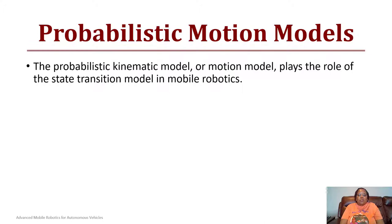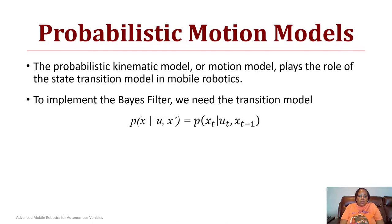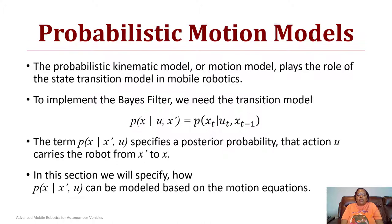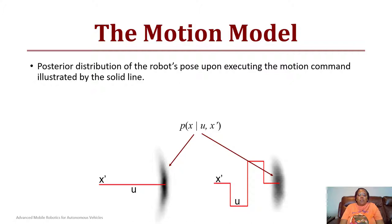For the probabilistic motion model that plays a role in the state transition model of the mobile robot, we look at the control input and the previous state in order to determine the next one. Notice there are two notations we have here and they mean the same thing: the probability of x given u and x prime. So x prime is the same as the previous state, where x is the current state, and u is the same as u_t which is the input at the time t. This specifies the posterior probability that an action u carried out by the robot will take it from x prime to x. In this section we will specify the model and the motion equations and the algorithm to be able to calculate the state for the robot.